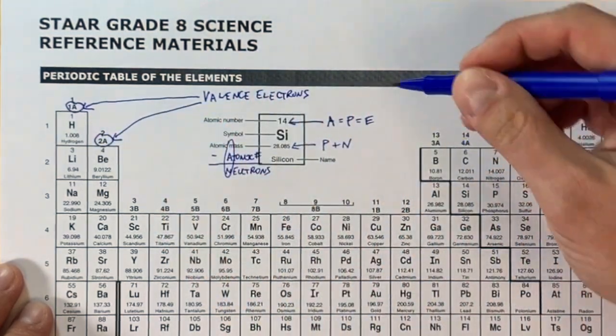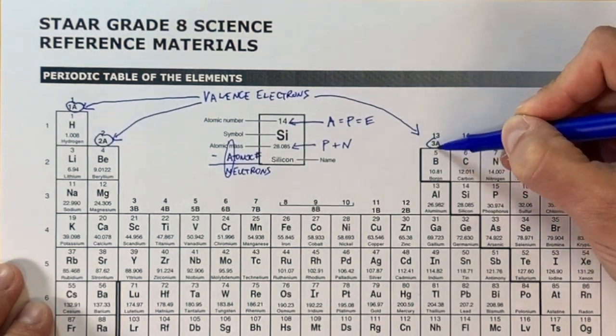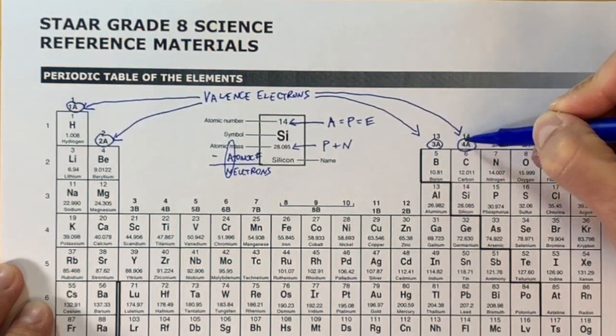That's going to tell you the number of valence electrons in these groups. So you can see one, two, this one's going to have three valence electrons, four, and so on.